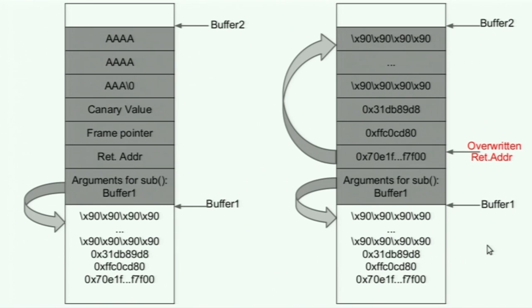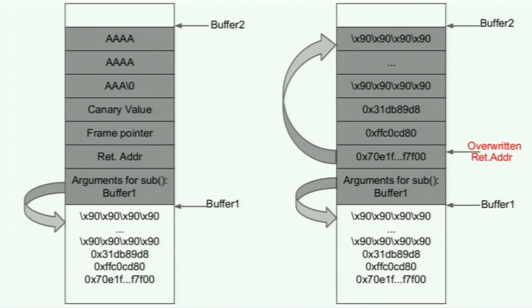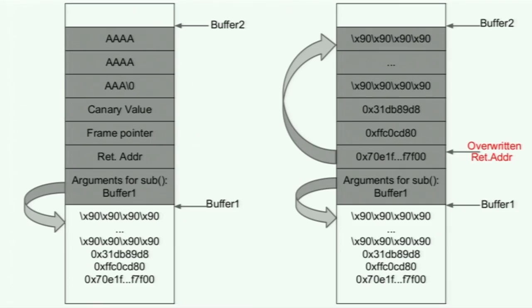System calls are the way to get into the operating system — if you want to read or open a file, you make a system call and get into the kernel for services. What he's talking about is a system call named 'exit': you exit naturally without creating any problems, and that is why you do not return to the main program. He has put the x86 machine code for executing the exit system call in the buffer.